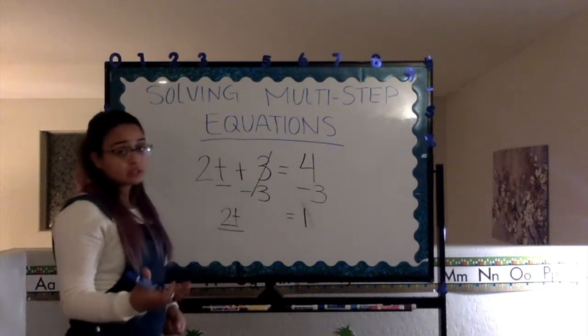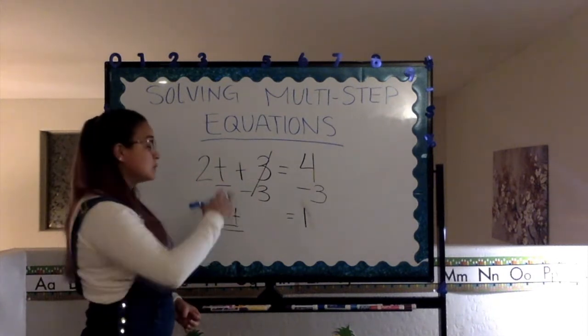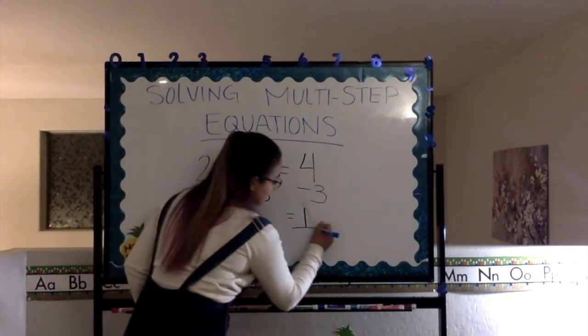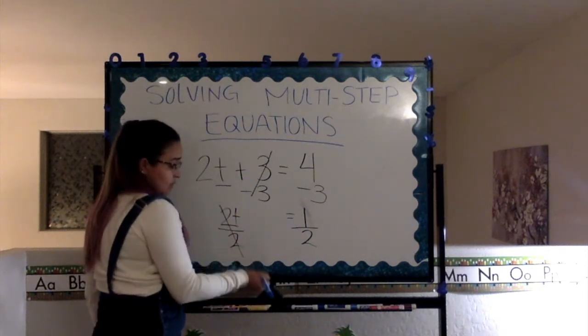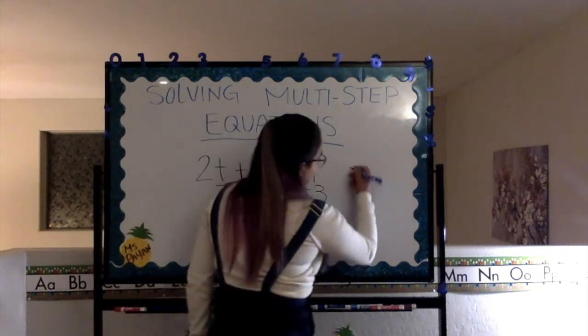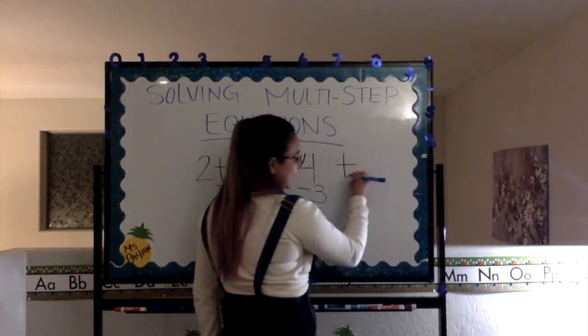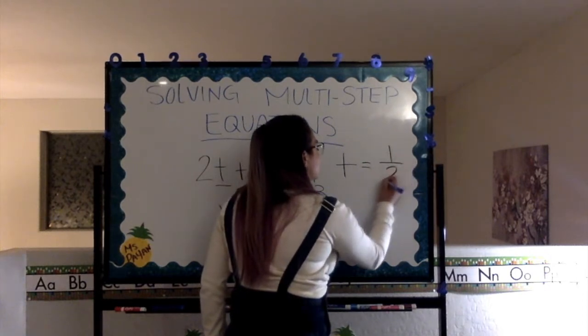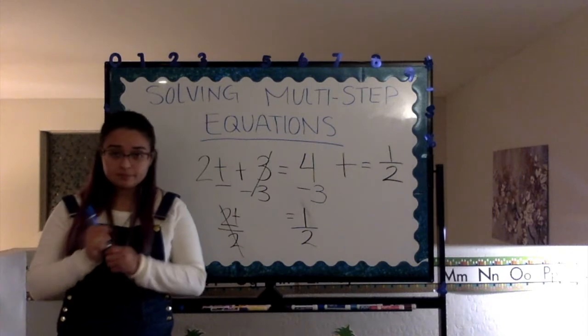Now, what we're going to do is we're going to divide 2 to both sides. Just like we did with the 3. We're going to divide by 2 here. And, divide by 2 here. The 2 cancels out right there. And, our final answer is that t equals 1 over 2. It equals a fraction. It equals half.